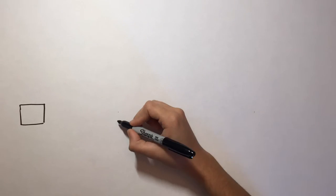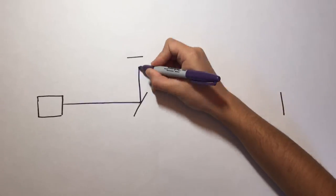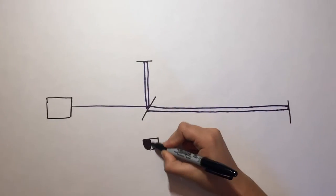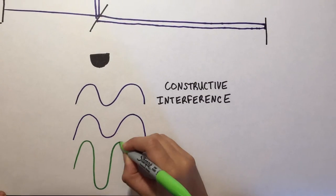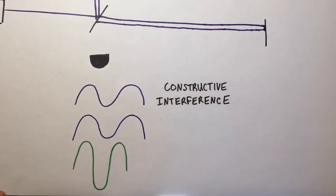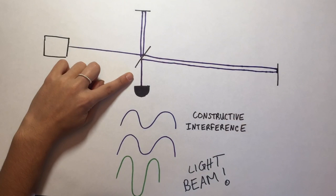As a gravitational wave passes by, one arm is shortened and the other is lengthened. As a result, the interference pattern changes. This is called constructive interference and in this case, the light beams do not cancel out as easily. This causes a beam of light on the photodetector, which tells scientists that they have in fact detected a gravitational wave.